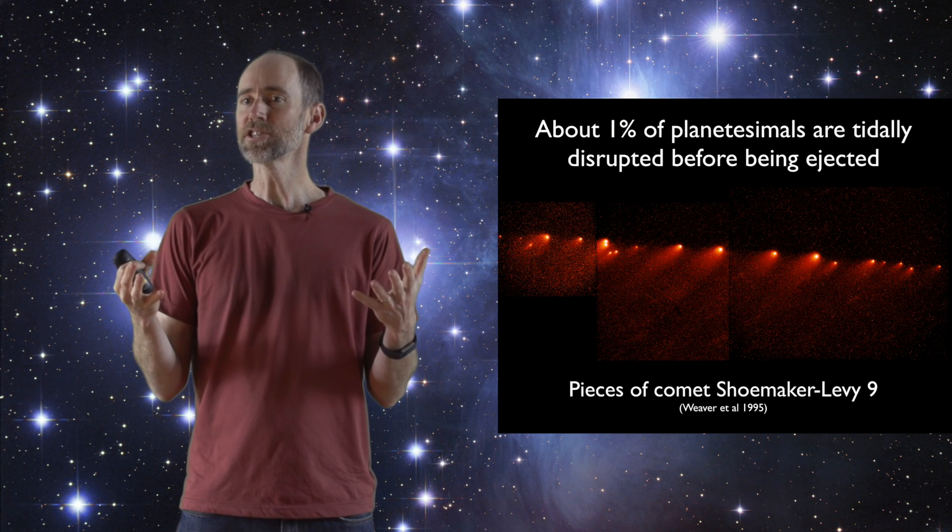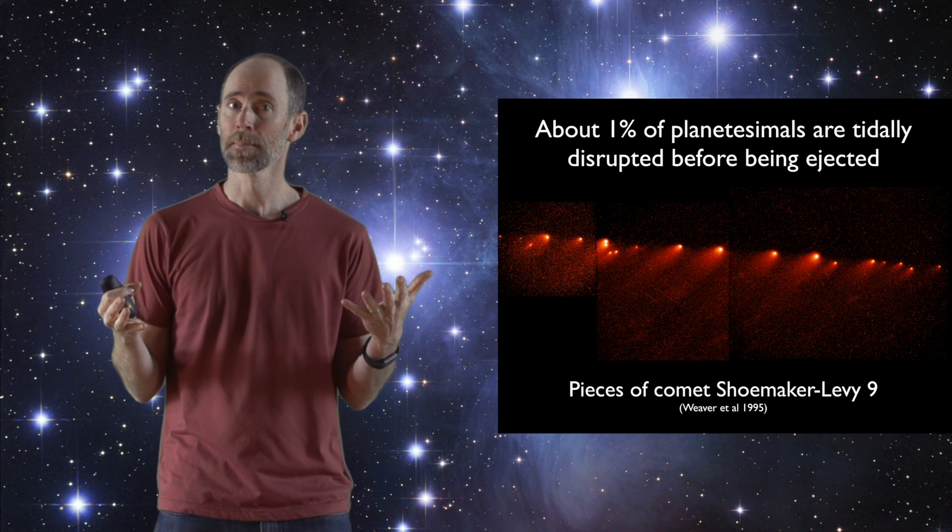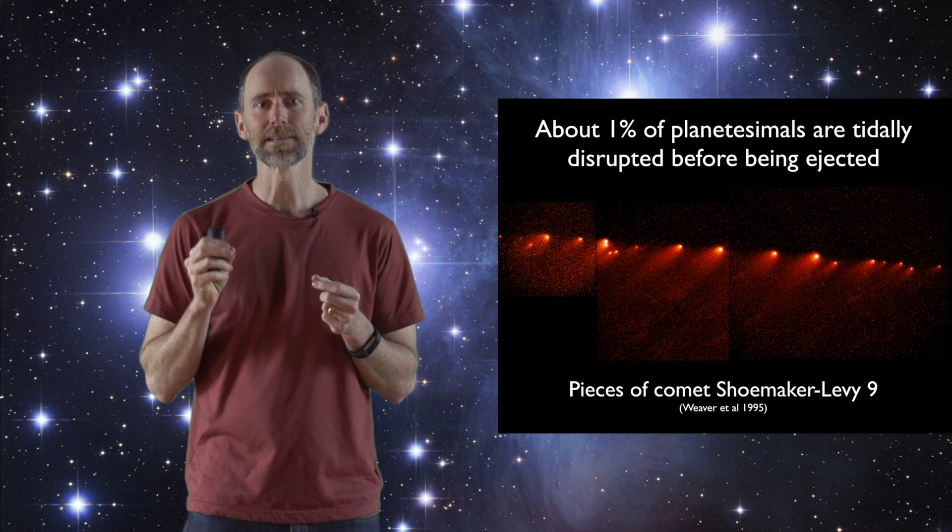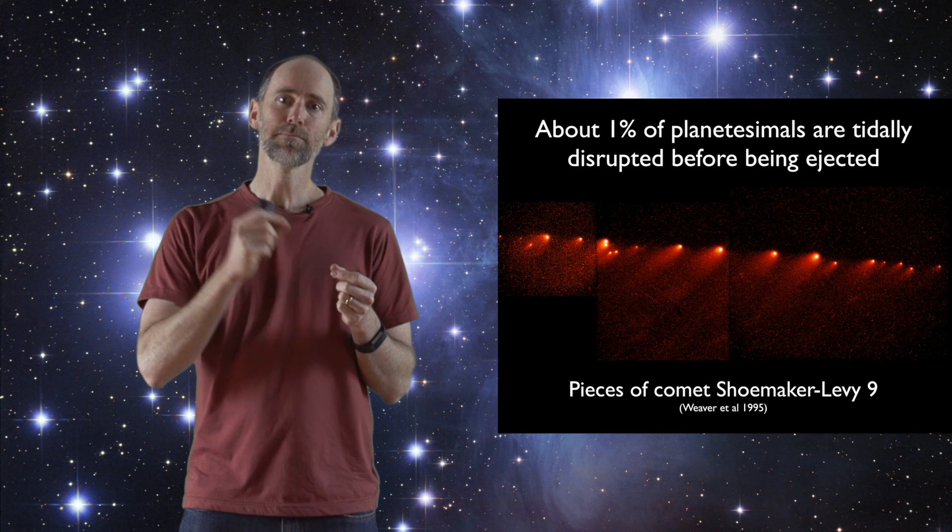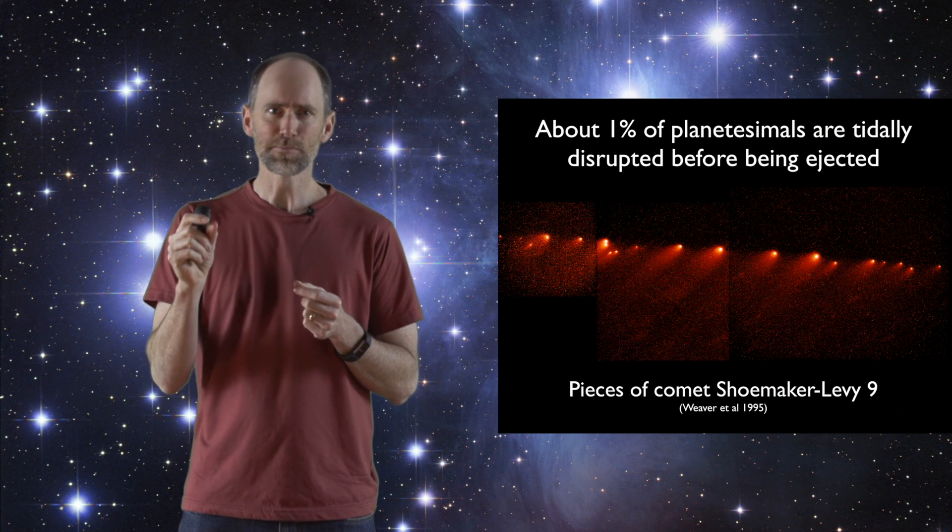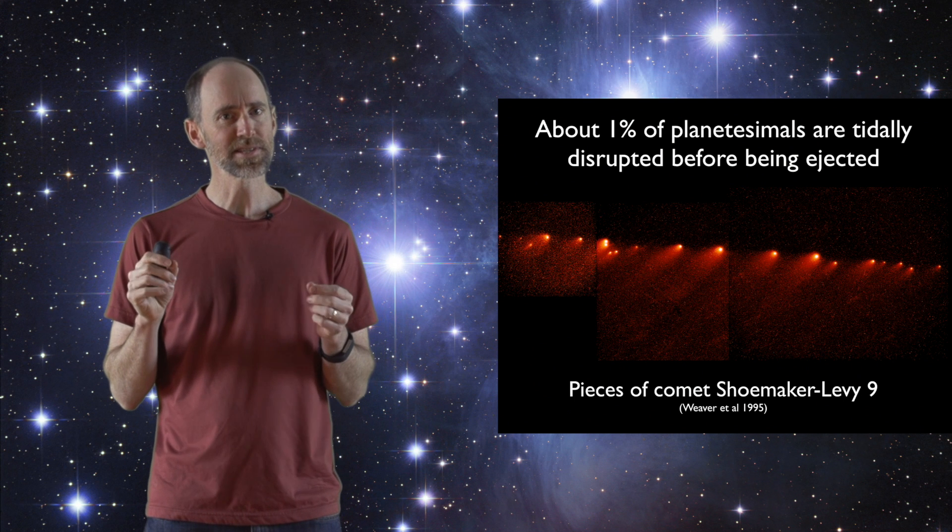Now we've run simulations of this process, and it's very efficient, and we've noticed something interesting. So on the path to being ejected, a small fraction of planetesimals, about one percent,